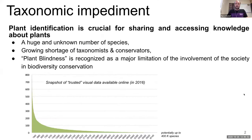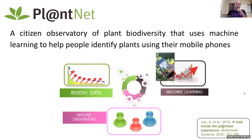Plant identification is a crucial step for sharing and accessing knowledge aggregated over the past centuries. Nevertheless, plant identification is difficult due to the high number of plant species in a given location, the growing exchange of plant specimens between regions of the world, and the growing shortage of taxonomists in many research institutes. This partially explains why plant blindness is recognized as a major limitation in societal involvement in biodiversity conservation.